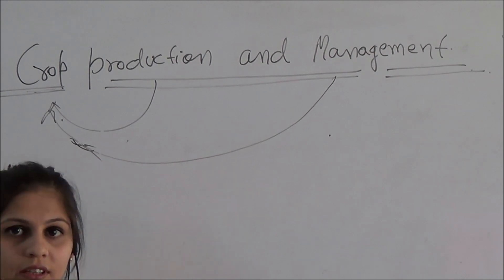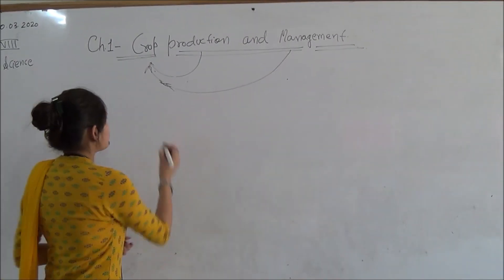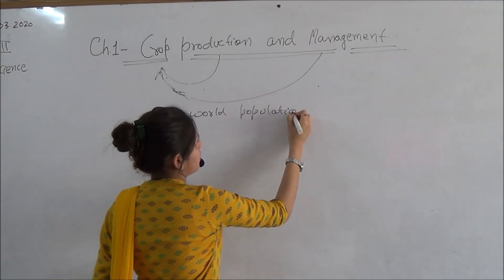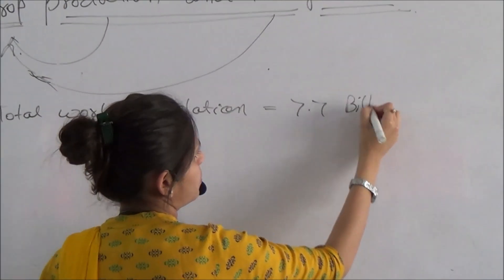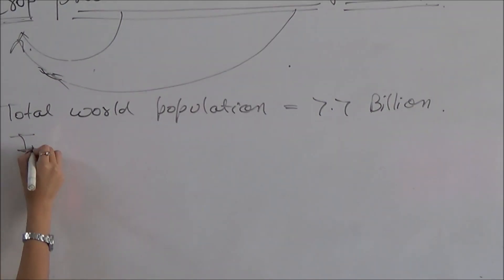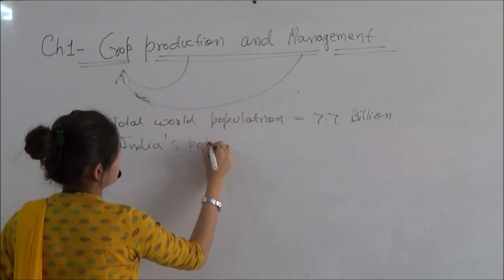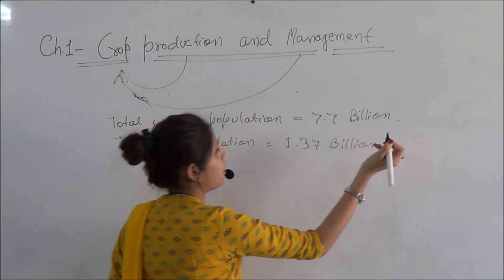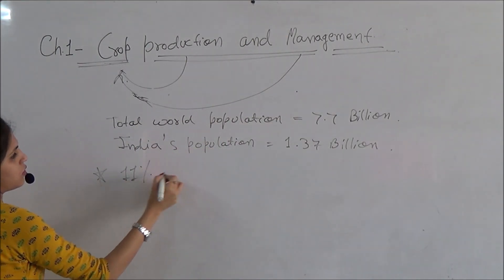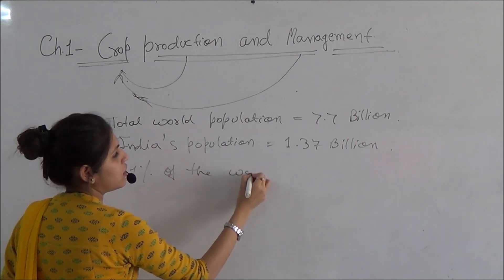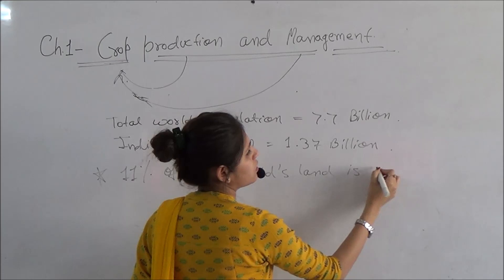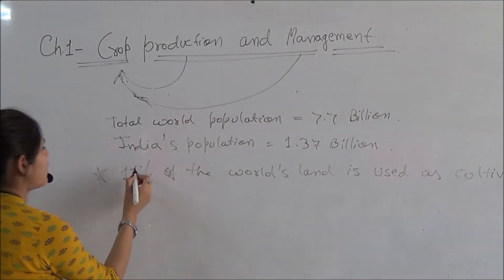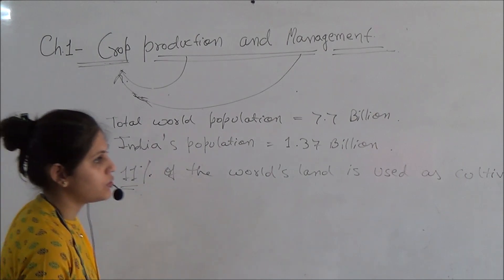Before starting this chapter, I would like to give you an important piece of information about the world population. The total world population is 7.7 billion right now, and the total India population is 11.37 billion right now. But only 11% of the world's land is used for cultivation. Since we have so much land, only 11% of it is used for cultivation — this is a strong point.